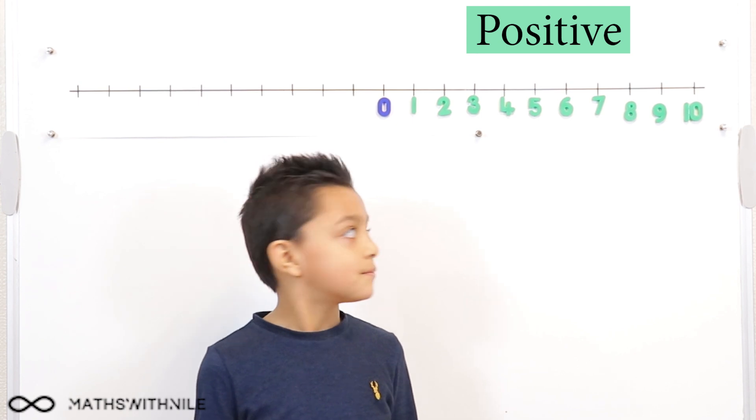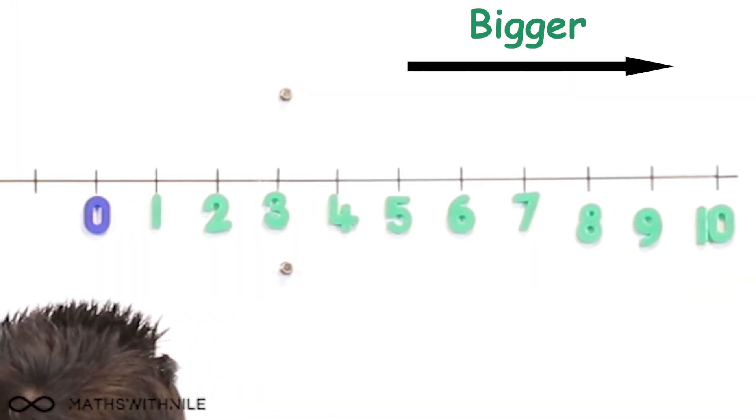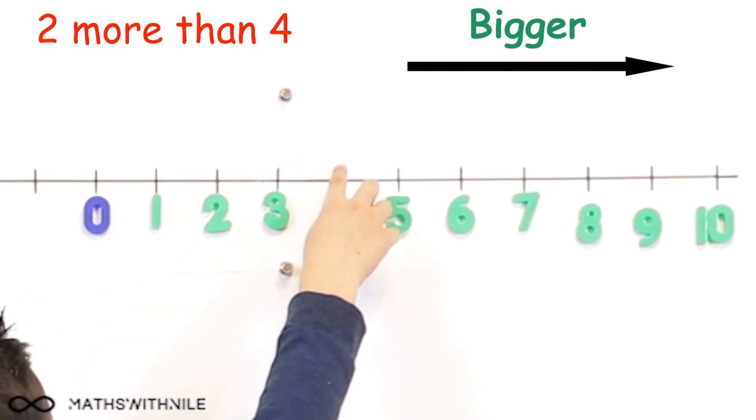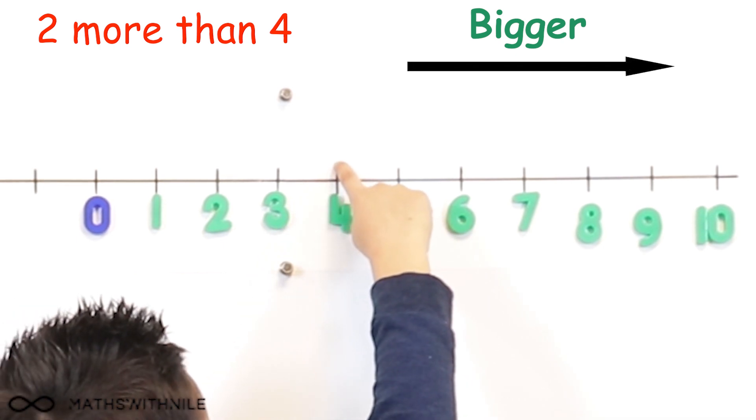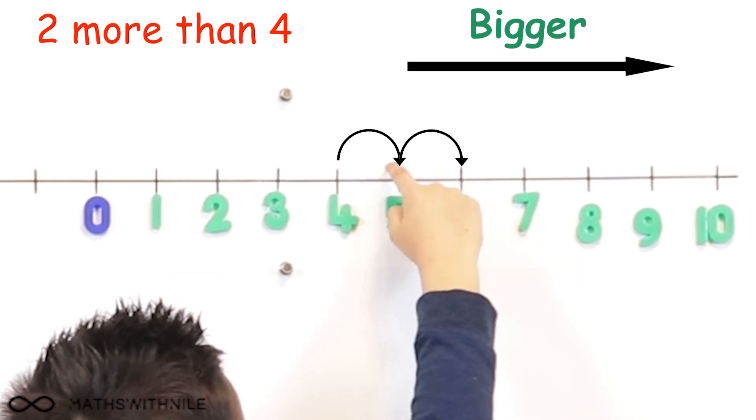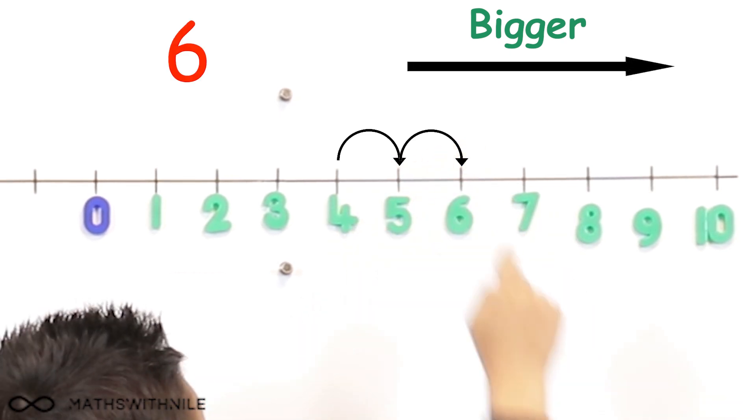So let's look at those positive numbers again. And can you show us on the number line how you would work out two more than four? Two more than four, so four add two. Two bits equals six.